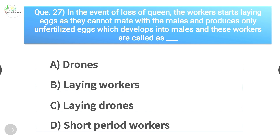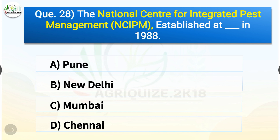Question number twenty-eight: The National Centre for Integrated Pest Management was established in which location in 1988? The options are: Pune, New Delhi, Mumbai, or Chennai. The correct answer is option B — New Delhi. The National Centre for Integrated Pest Management was established at New Delhi in 1988.